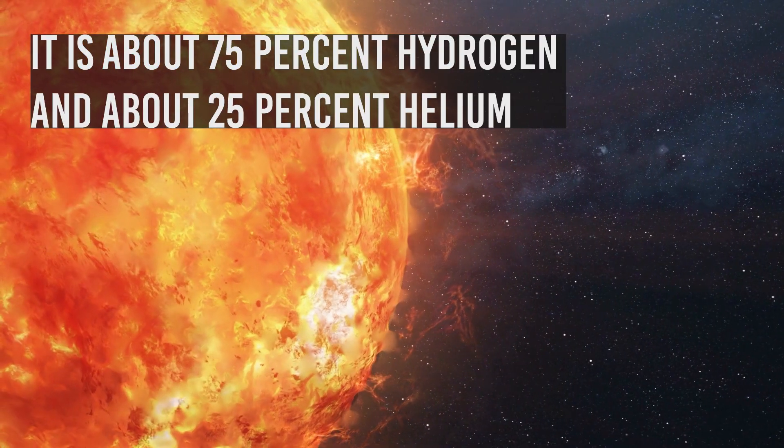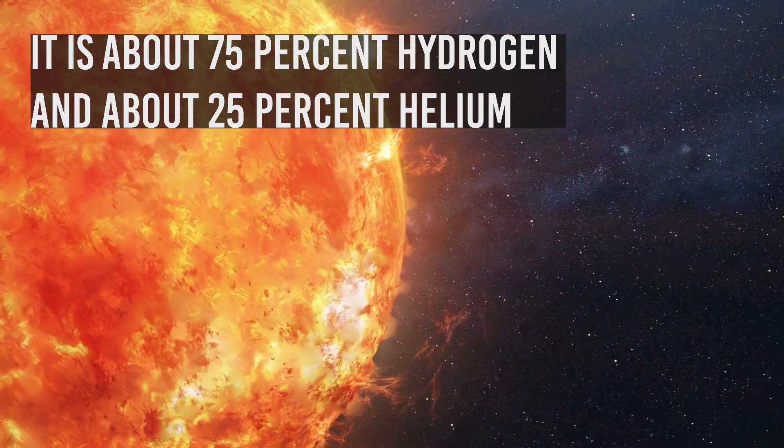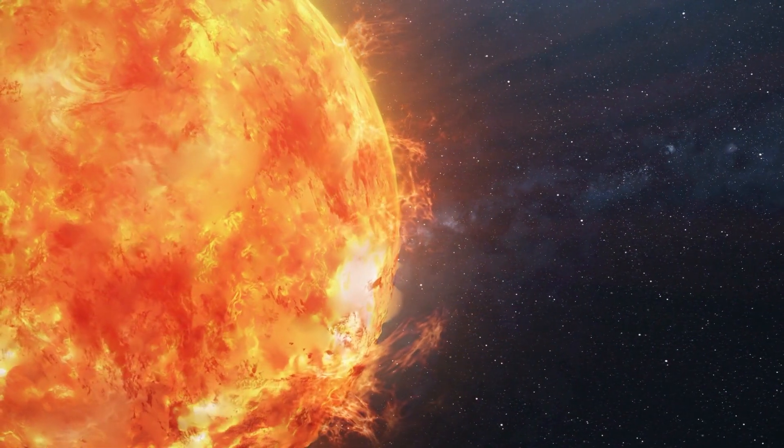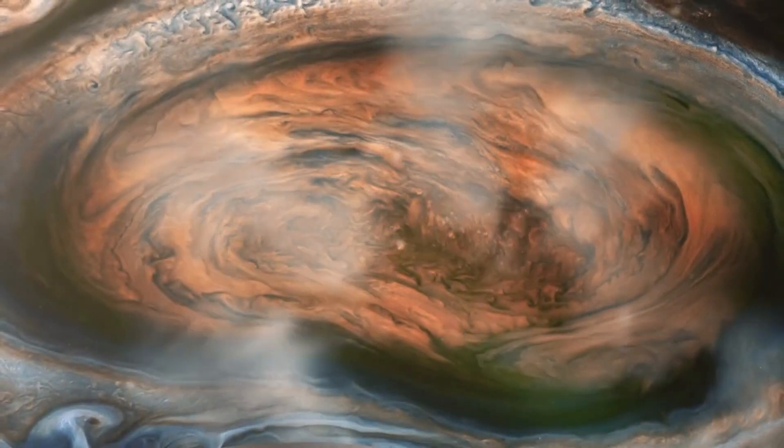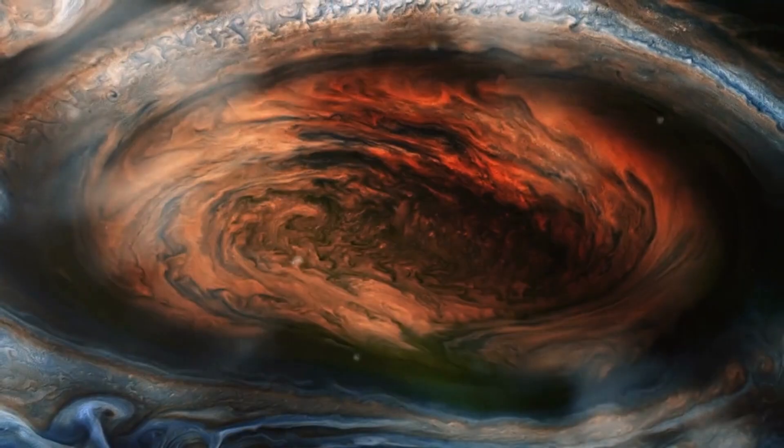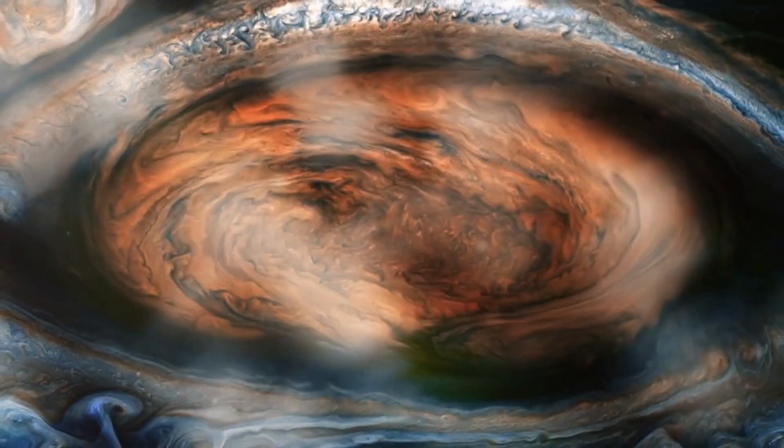It is about 75% hydrogen and about 25% helium. The remaining traces are tiny amounts of metals. A really interesting thing is that Jupiter has the same composition as the Sun. If the Sun were smaller, it would just be a huge ball of hydrogen akin to Jupiter.